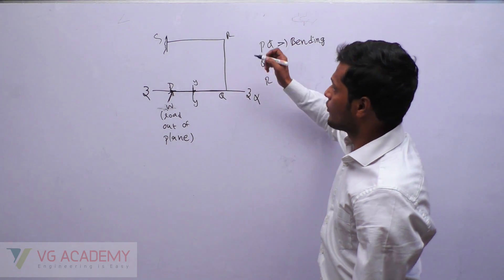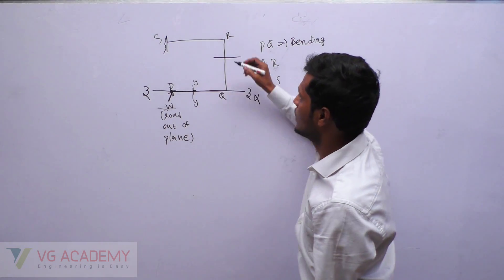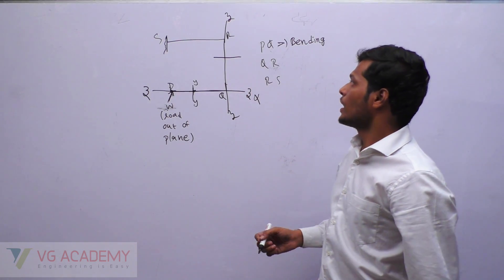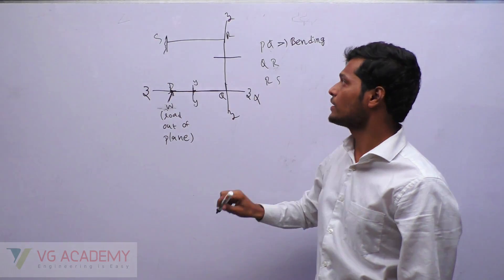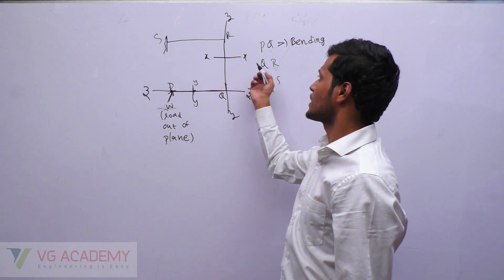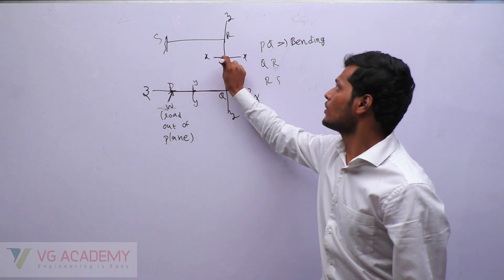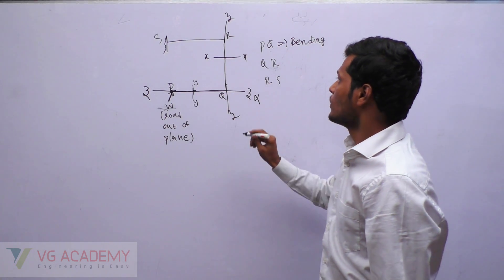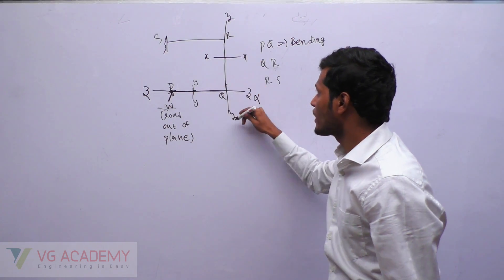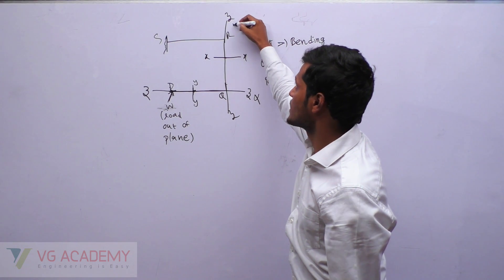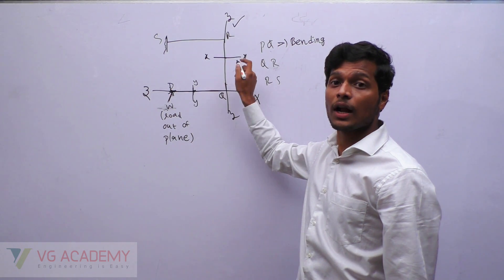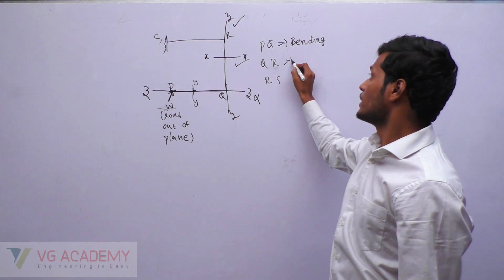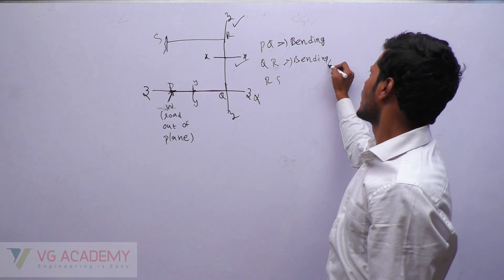Next, QR. Identify the cross section for QR and draw the longitudinal axis ZZ. Extend the load line and apply the rules. Let me call the horizontal axis X. This vertical axis is parallel to the load line — remove it. The Z axis is not parallel and not meeting — so it is eccentric. The X axis is also not meeting and not parallel — so it is eccentric about both Z and X axes, meaning the beam QR is both bending and twisting.